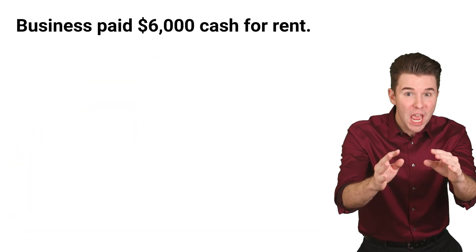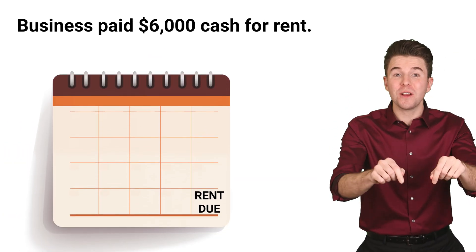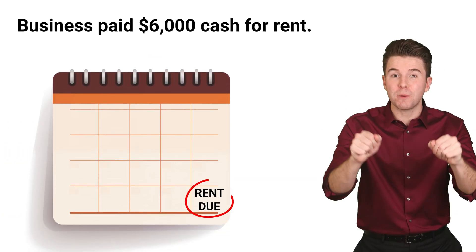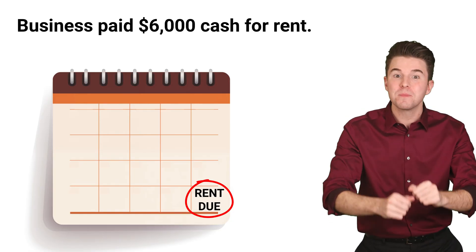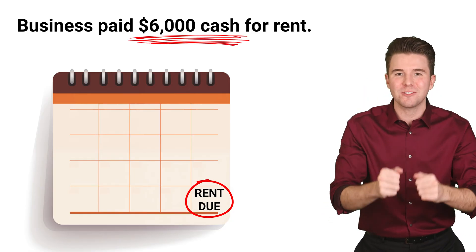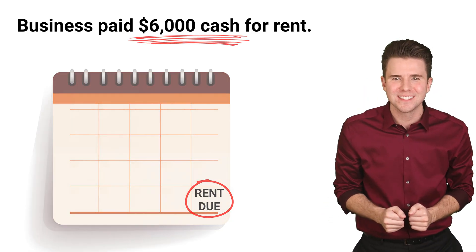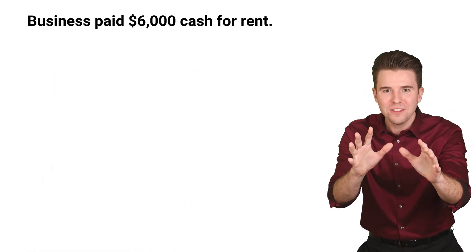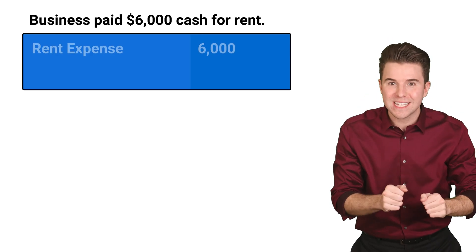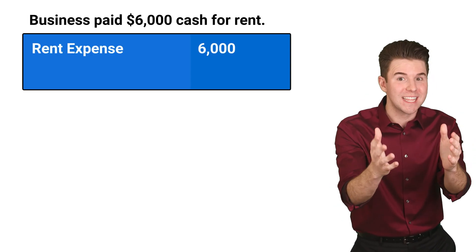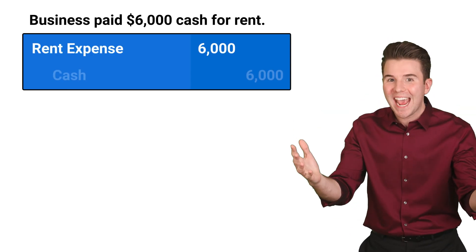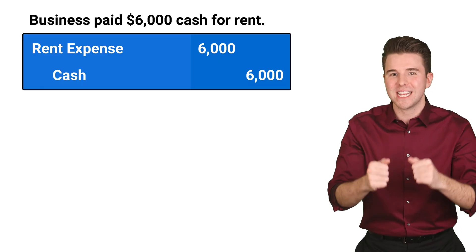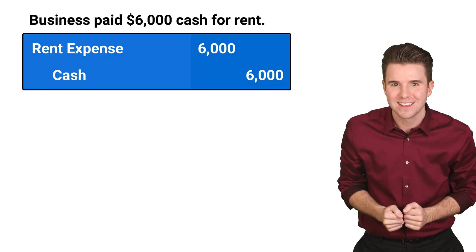Next, we pay our current month's December rent for the fitness center of $6,000. To record this, we debit rent expense for $6,000 and credit cash for $6,000.